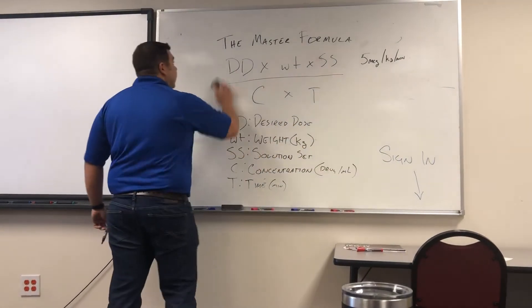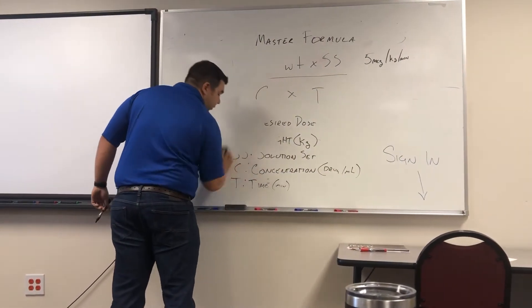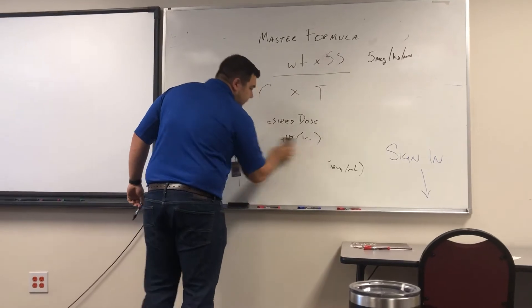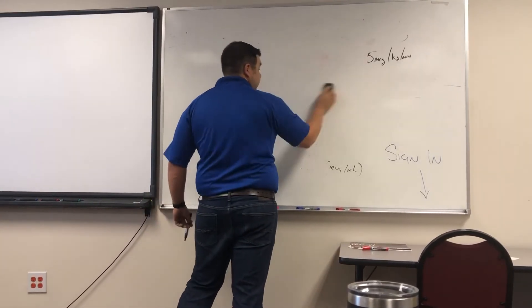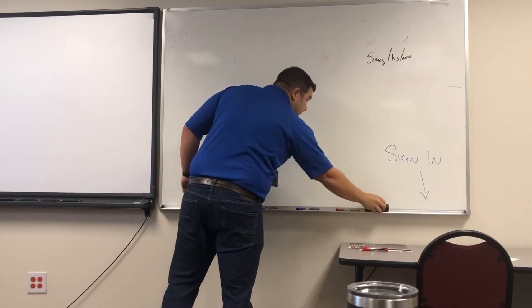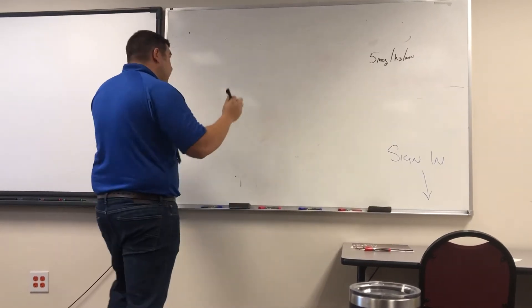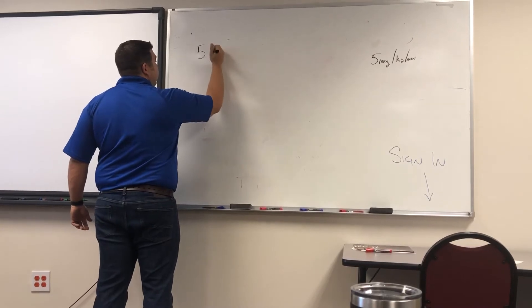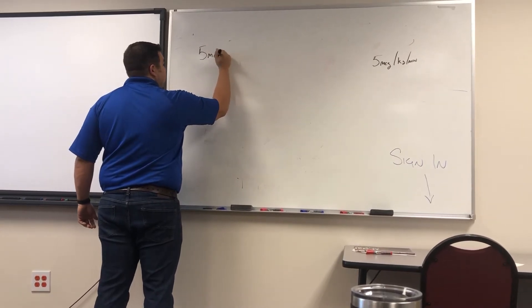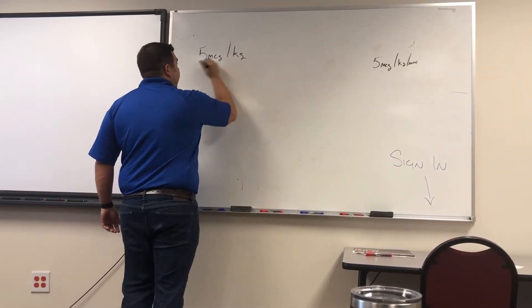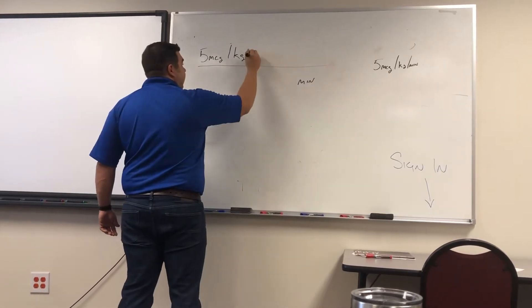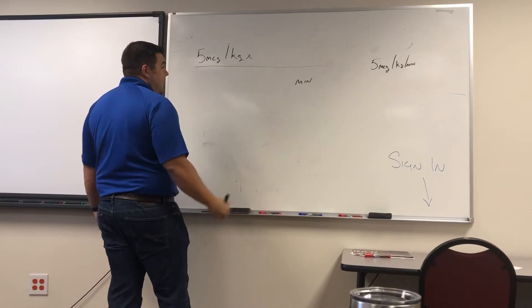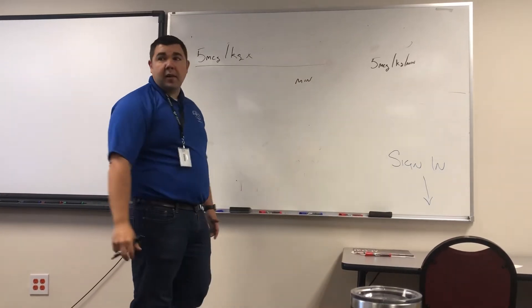I'm going to erase this so I have enough room. And again, if I go too fast, I'm going to go back over it piece by piece and break it apart. So our desired dose, five micrograms per kilogram. And we can take that minute and just go ahead and put it down here since it's only one minute. Times a patient's weight, let's say it's 132 pounds. How many kilograms is that?